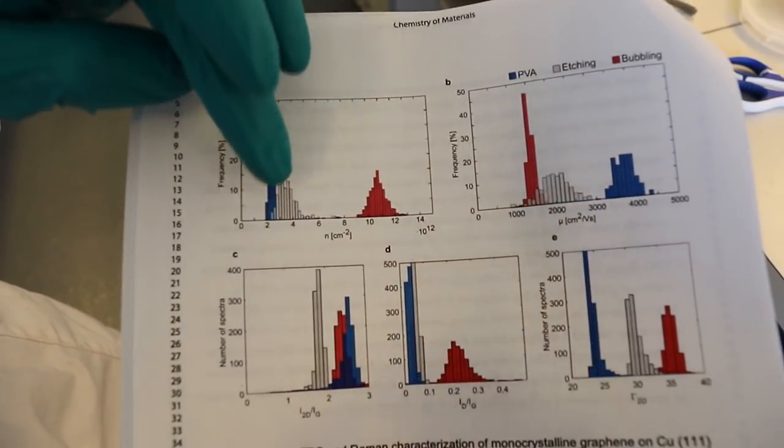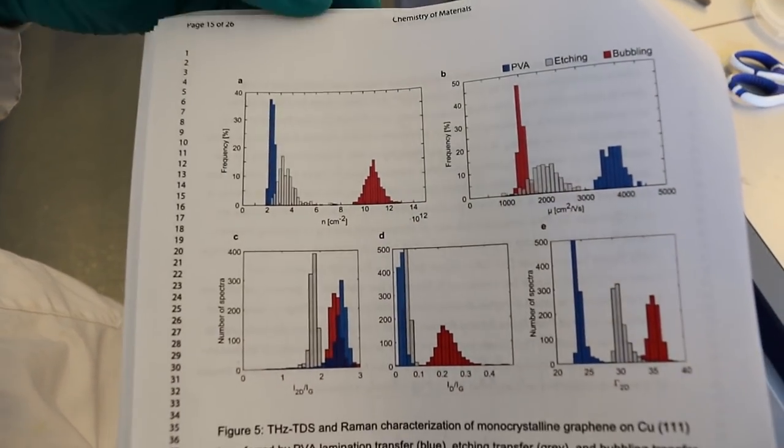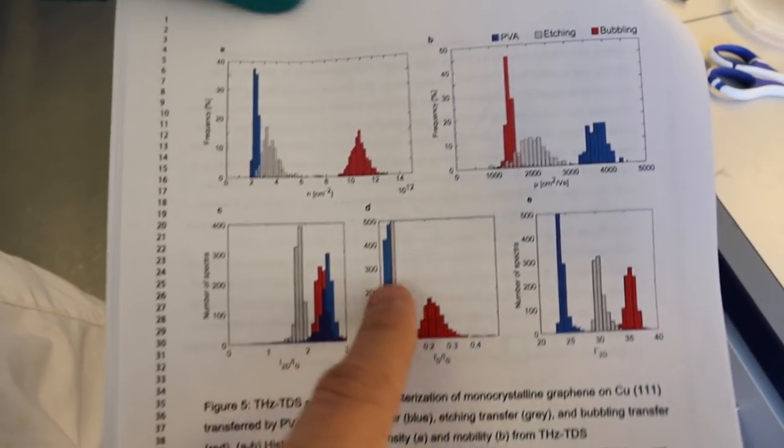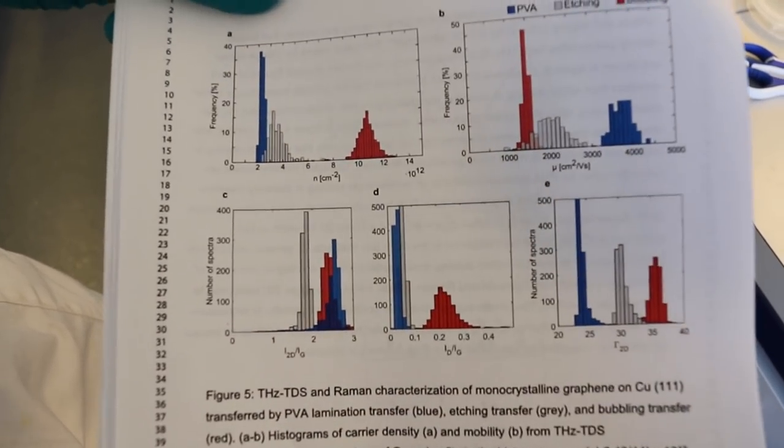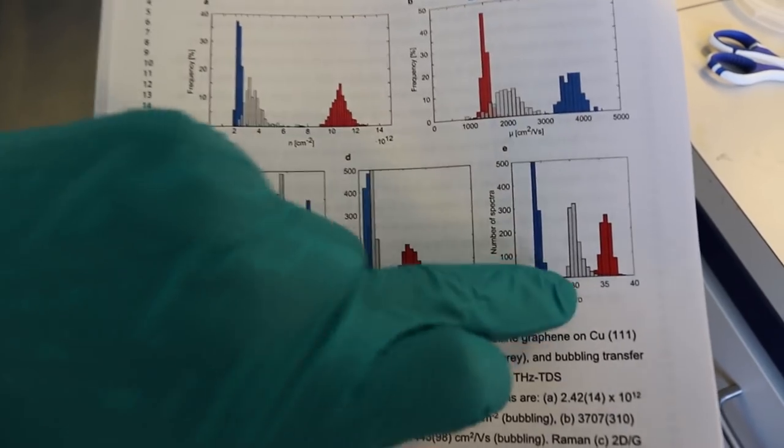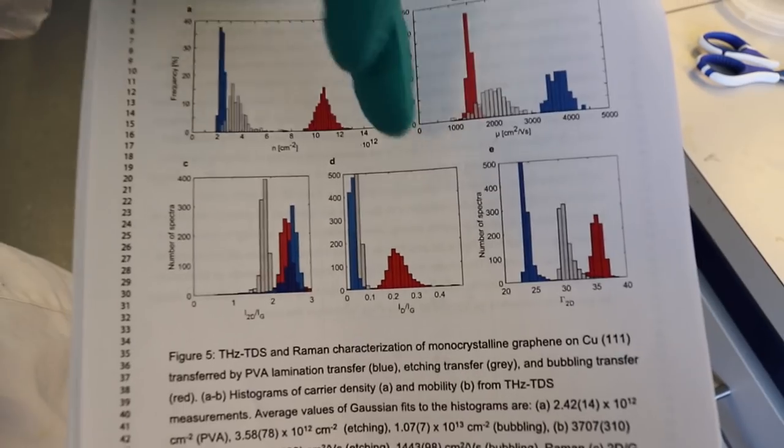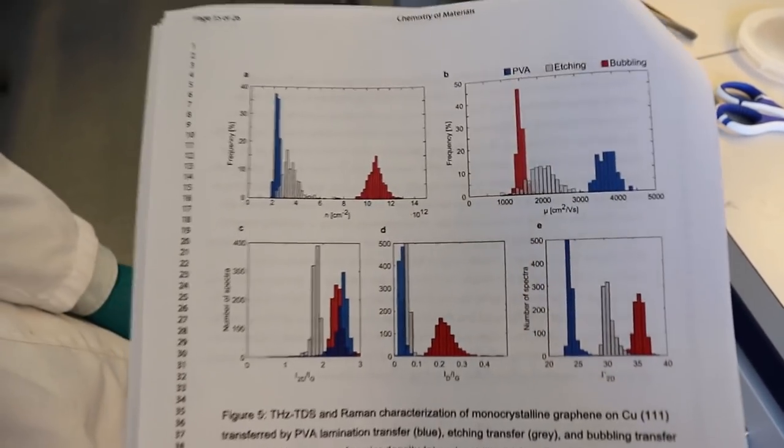The gray one is bubbling and the red is etching transfer. So we should keep an eye on the blue one. The bottom is the Raman spectroscopy. This is the 2D to G ratios. This is the D to G ratios. And this is the full width half maximum of the 2D peak. And in all cases you see that PVA is better than bubbling and etching transfer.